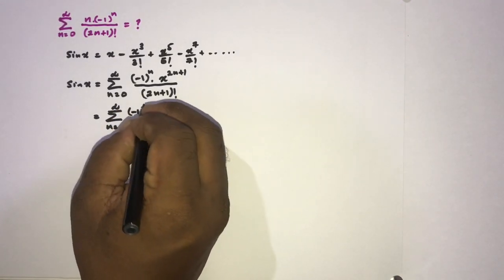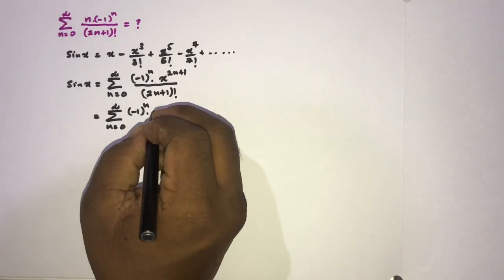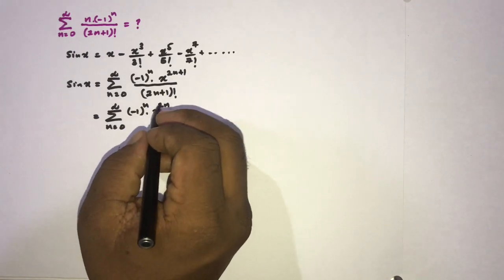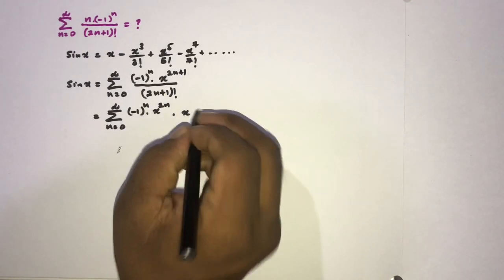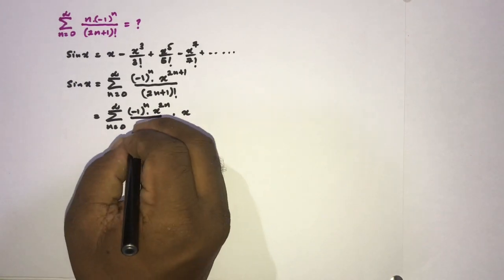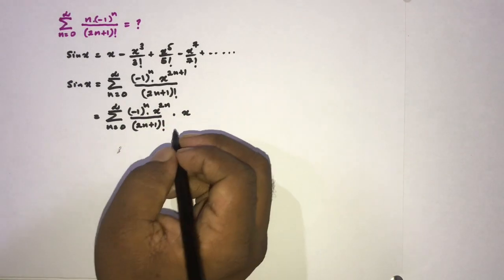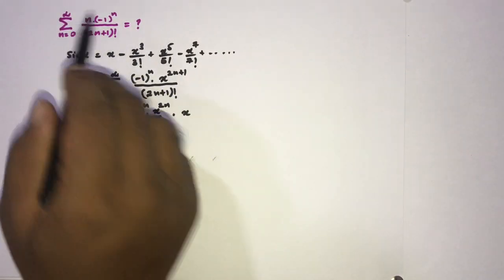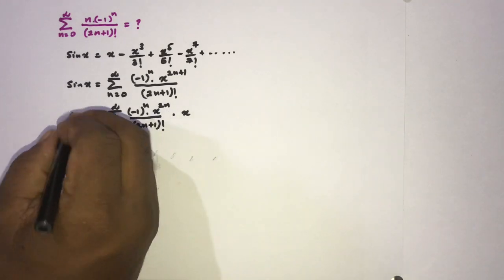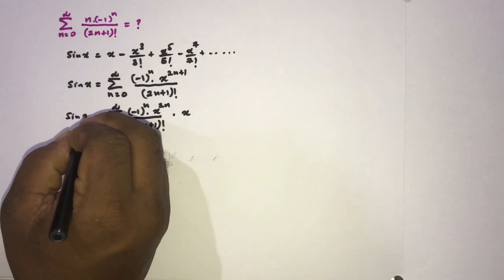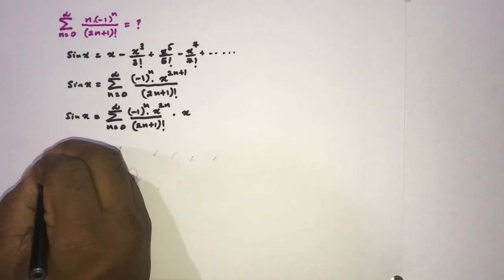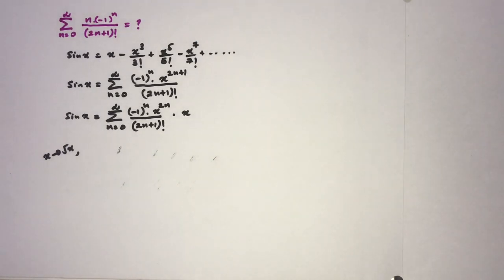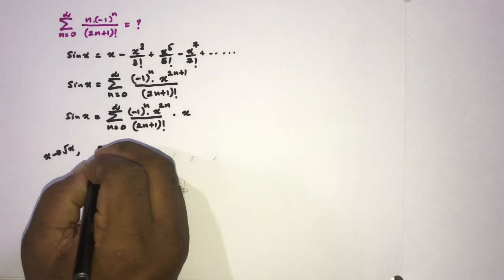We can write the sum from zero to infinity of (-1)^n times x to the (2n+1) — and I'm going to rewrite x to the (2n+1) as x to the (2n) times x — over (2n+1) factorial. Now we have n in the numerator but here we have 2n, so I'm going to make a substitution: let x be replaced by the square root of x.